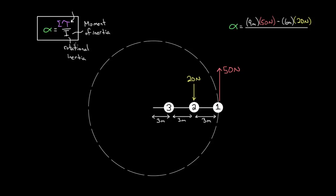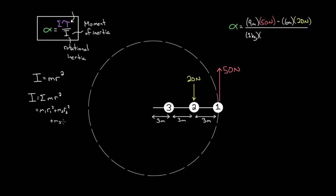To find the rotational inertia with three masses, the total moment of inertia is the sum of all the individual moments of inertia. Each point mass contributes m times r squared. So this is m₁r₁² + m₂r₂² + m₃r₃². For mass one (1 kg) at 9 meters from the axis: 1 × 9². For mass two (2 kg) at 6 meters: 2 × 6². For mass three (3 kg) at 3 meters: 3 × 3². You add all the contributions.